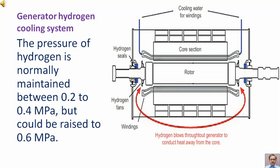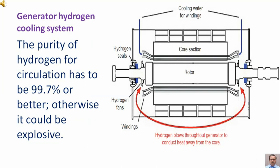The pressure of hydrogen is normally maintained between 0.2 to 0.4 MPa but could be raised to 0.6 MPa. The purity of hydrogen for circulation has to be 99.7% or better. Otherwise, it could be explosive.